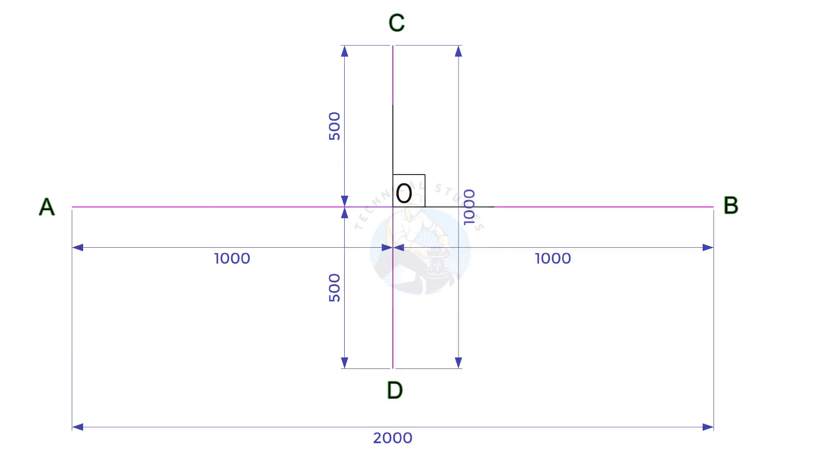Let us learn how to lay out this dish end. Draw line AB 2000 mm long and the perpendicular line CD intersecting at O.